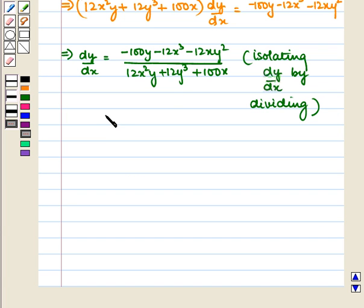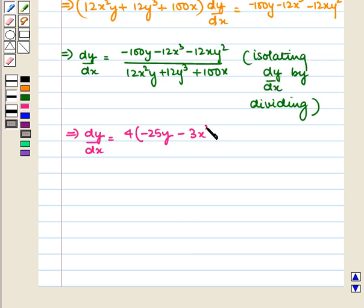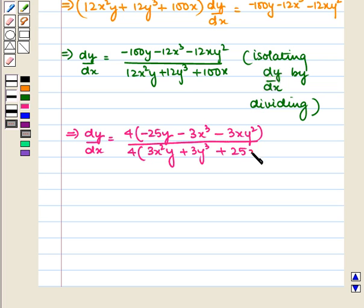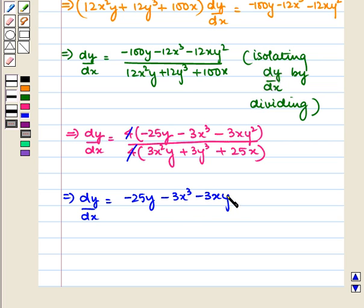Now, 4 is common in both numerator and denominator. So we get dy/dx is equal to (minus 25y minus 3y cubed minus 3xy squared) upon (3x squared y plus 3y cubed plus 25x). This is the required answer.